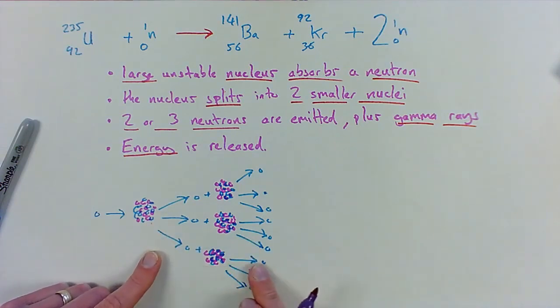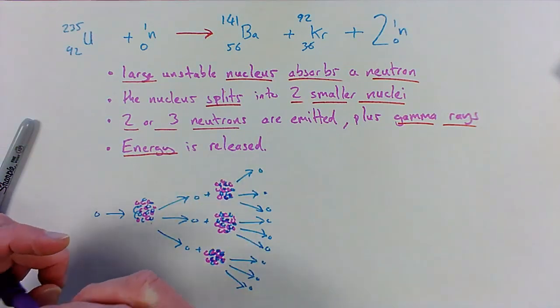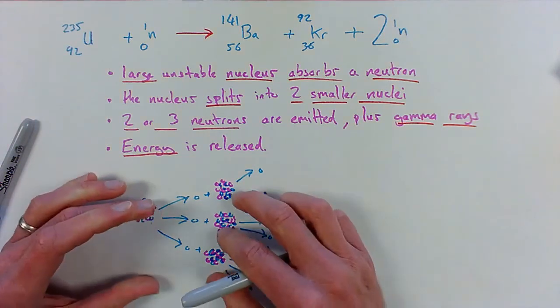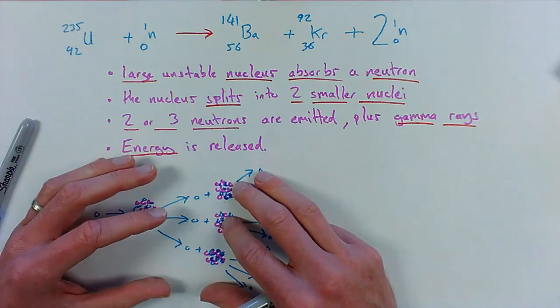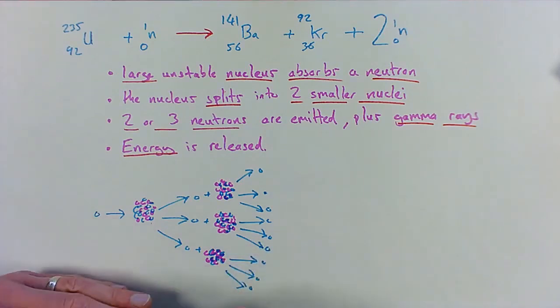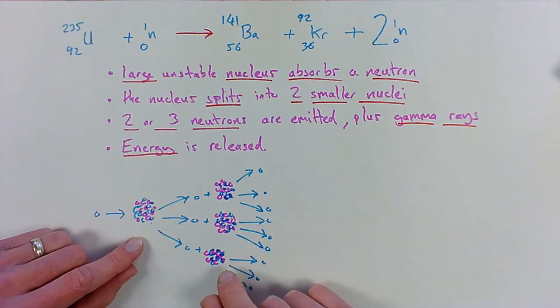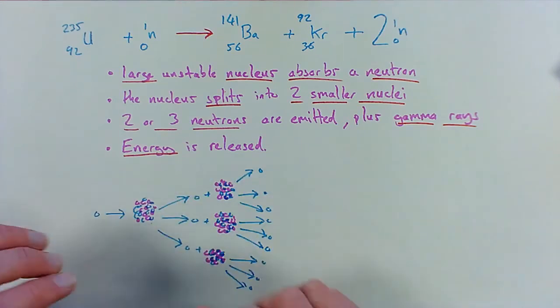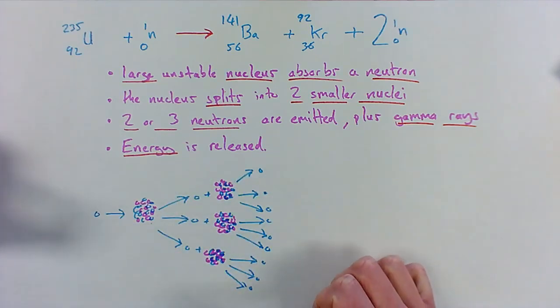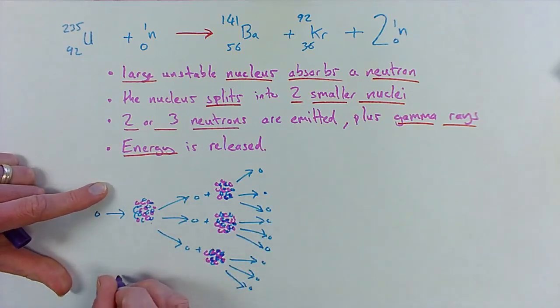Now if this isn't controlled, this is the makings of a nuclear bomb. If it is controlled, then its energy release can be used to generate electricity. They will use the energy that is released, the heat in the energy, to boil water, generate steam, turn a turbine, and you can generate electricity from it. So this creates a chain reaction: two, two, three, two.